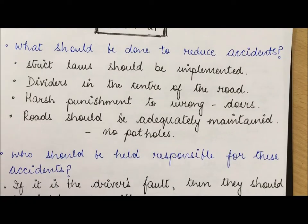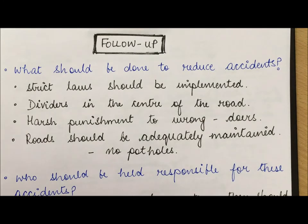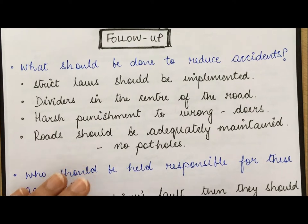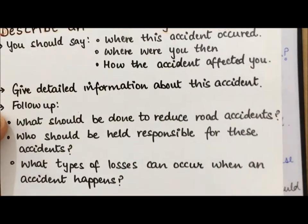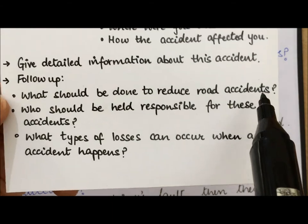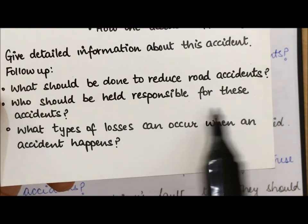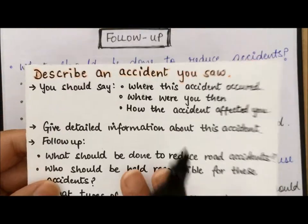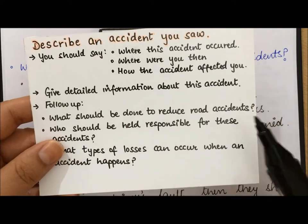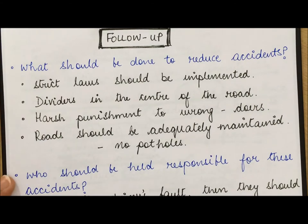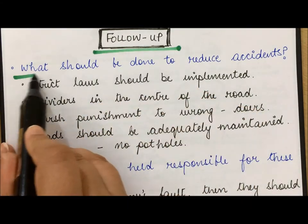Now moving on to Part 3 of the speaking test, which comes after the cue card. This is the follow-up discussion, lasting five to seven minutes. The examiner will ask questions related to your topic. For example, they might ask: what should be done to reduce road accidents, who should be held responsible for accidents, and what type of losses can occur when an accident happens.